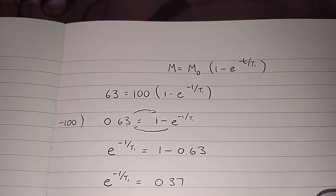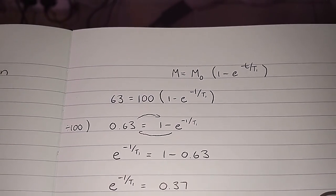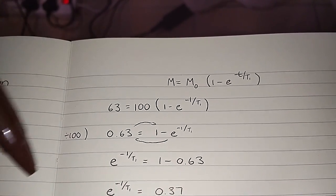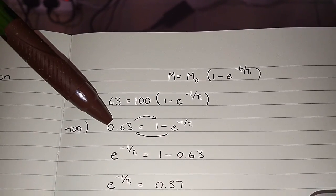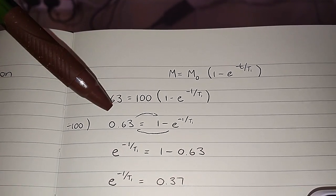So the first thing I did was I divided both sides by 100 in order to get rid of the 100 in front of the brackets over there. That gives me then a 0.63, the 63 divided by 100.